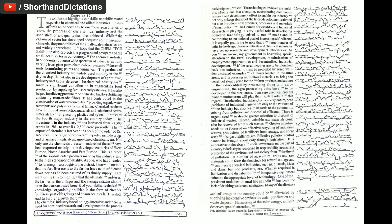As you are aware, my government is bestowing special attention to rural development, maximization of employment opportunities and decentralized industrial development. If the rural incomes are to be plowed back into industries, it must be preceded by some well-demonstrated examples of plants located in the rural areas and processing agricultural materials to bring the benefit of steady price for the farm produce and a share in the value added by processing along with agro-engineering. The agro-processing units have to be developed in the rural areas.